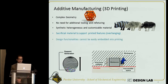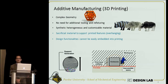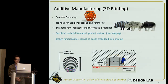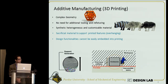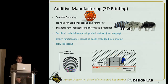It can generate objects with heterogeneous and customizable materials. However, there are several disadvantages for 3D printing. It usually requires sacrificial material to support the overhanging features, just like this case showing here. And it is difficult to embed functionalities into the printing process.